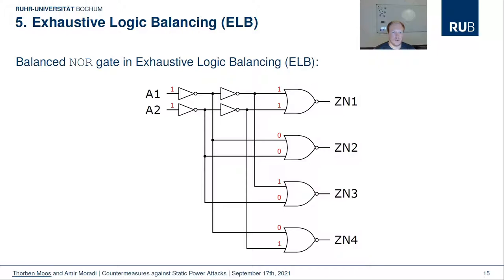Each NOR gate in the implementation to be protected must be replaced by a circuit containing four inverters and four NOR gates, which leads to considerable overhead. The ZN outputs which are not needed can simply be left unconnected.